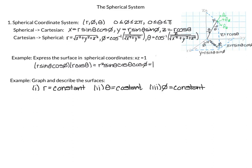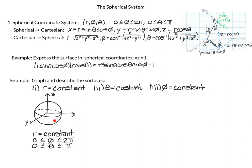The last conversion examples ask us to describe and graph three surfaces. First, r equals a constant: this gives a sphere, because r is fixed while theta goes from 0 to 2π and phi goes from 0 to π, covering the full surface of a sphere.